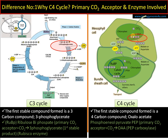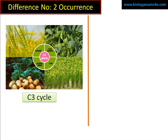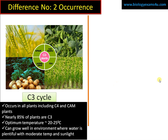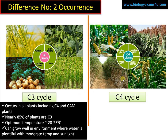Difference number two — occurrence. C3 cycle is very common in wheat, potatoes, rice, etc., and occurs in all plants including C4 and CAM plants. More than 85% of plants are C3. The optimum temperature is 20 to 25 degrees Celsius, and this cycle works well in environments with sufficient water, moderate temperature, and sunlight. In those conditions, even if photorespiration occurs, it does not significantly harm the plant.